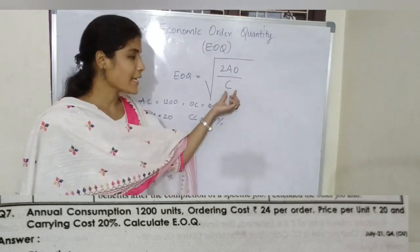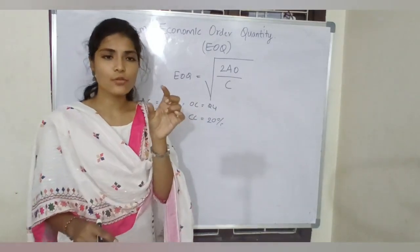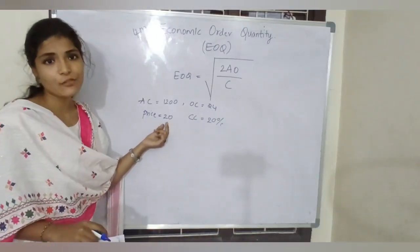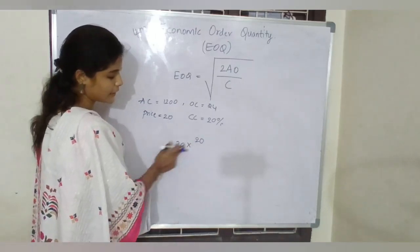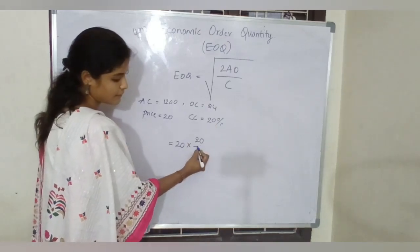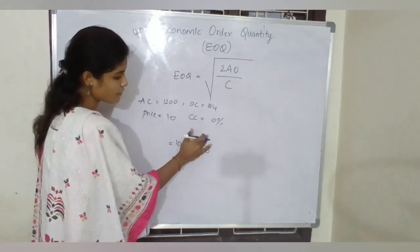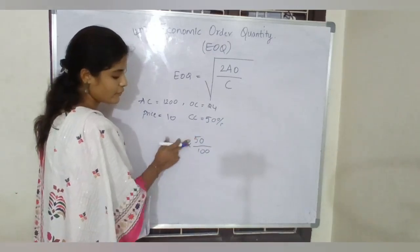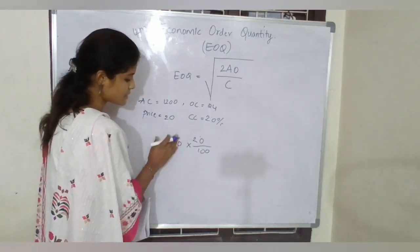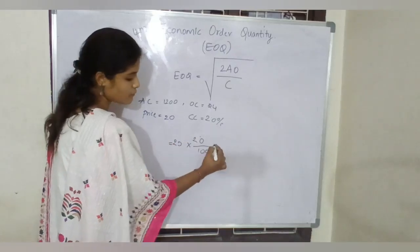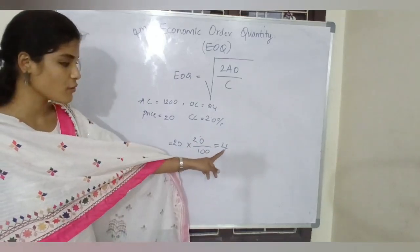In any EOQ question, carrying cost will be given as a percentage. To convert that percentage into a number, you multiply it by the price given. So here, price is 20 and carrying cost percentage is 20, so we do 20 into 20 divided by 100, which gives us 4. In this question, 20 percent carrying cost on price of 20 rupees gives us a carrying cost of 4.